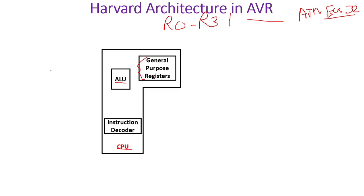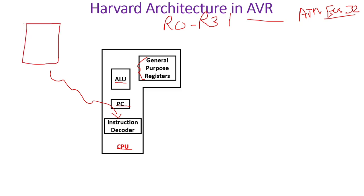We also have an instruction decoder inside the CPU. Whatever code is fetched from ROM memory first comes into the instruction decoder, which decodes it, and then the ALU performs the task based on that decoded instruction. Additionally, there is a program counter inside the CPU, which stores the address of the next instruction to be executed. For example, if the CPU is currently executing the instruction at ROM address 2000, the program counter will hold address 2001.